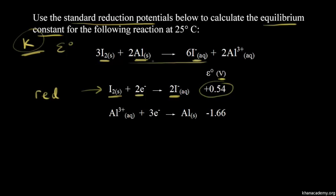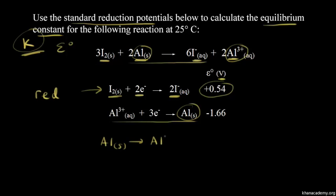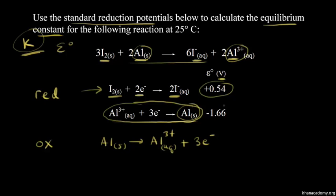If we look at what's happening with aluminum, we're going from solid aluminum to aluminum 3+. So solid aluminum must be losing electrons to turn into aluminum 3+, meaning aluminum is being oxidized. But this half reaction is written as a reduction half reaction, so we need to reverse it to start with solid aluminum. So aluminum turns into aluminum 3+, losing three electrons. We reversed our half reaction, so we change the sign. The standard reduction potential was negative 1.66 volts, so the standard oxidation potential becomes positive 1.66 volts.